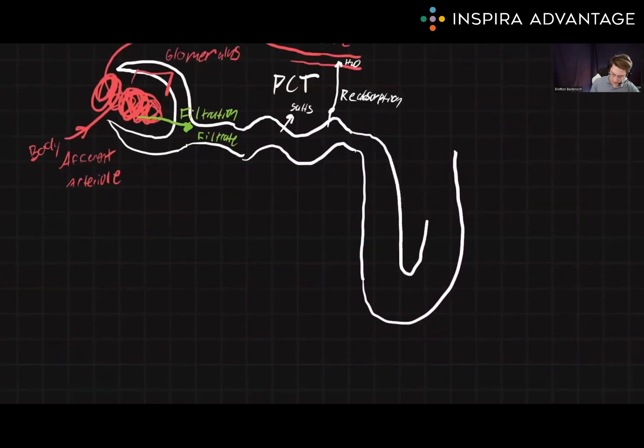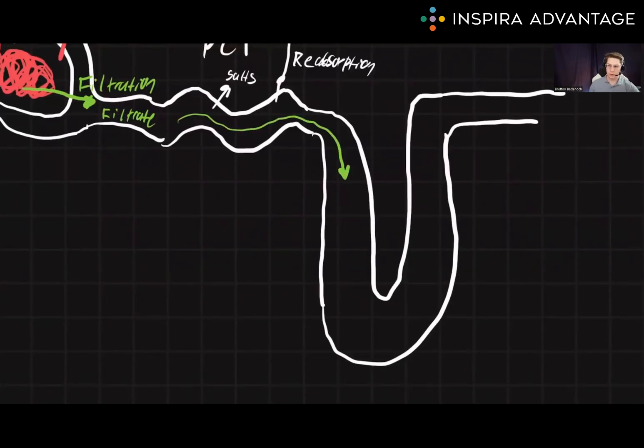So, we need to draw these in. The filtrate will start moving down the descending loop of Henle. At the descending loop of Henle, this is where water is reabsorbed into the surrounding tissues. So, how does this water move out here? Well, I'll give you a hint. It doesn't take any ATP.